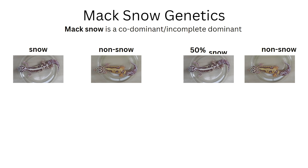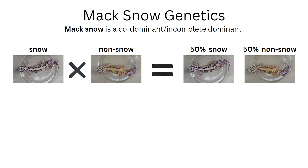Let's talk about the basic genetics of snows. Max snow is a codominant — or incomplete dominant, to use the right term — but let's use codominant. So what is codominant? If the parents are snow and non-snow, the offspring will come out as snows and non-snows: a 50% chance to produce snow and 50% chance to produce non-snow. This is how dominant gene works.